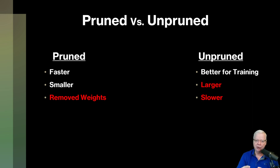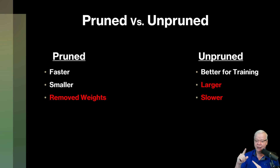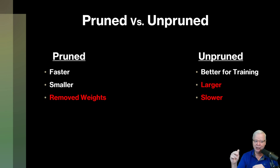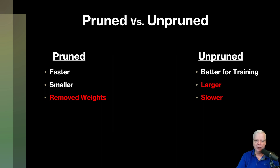However, if you want to use a model for merging or training another model, you want the unpruned version because the weights within the normal model are very important when training or merging models. So if you plan on doing merging, go with the unpruned version. If not, go ahead with the pruned version. Unpruned models also work better with fine-tuned models.